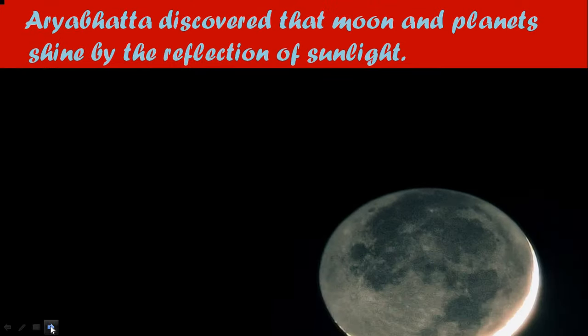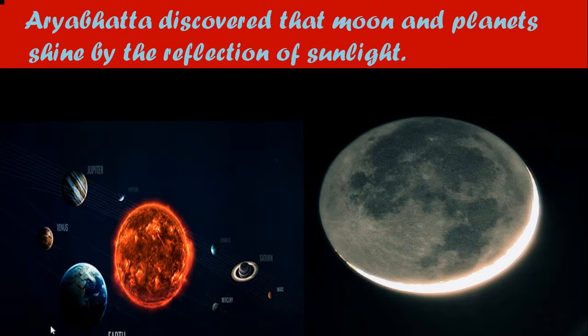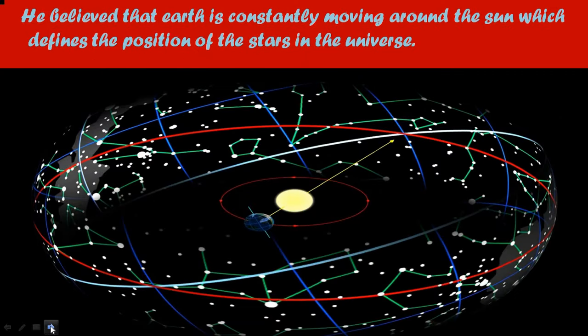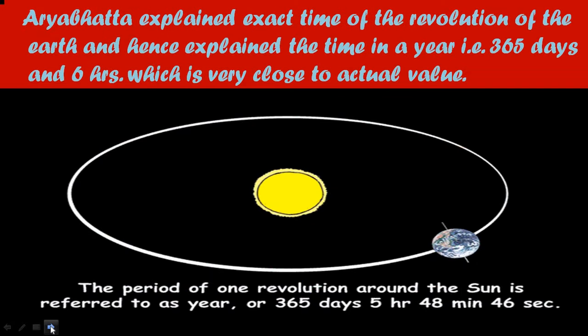Aryabhata discovered that the moon and planets shine by the reflection of sunlight. He believed that the earth is constantly moving around the sun, which defines the position of the stars in the universe. Aryabhata explained the exact time of the revolution of the earth and hence explained the time in a year, i.e., 365 days and 6 hours, which is very close to the actual value of 365 days, 5 hours, 48 minutes, and 46 seconds.